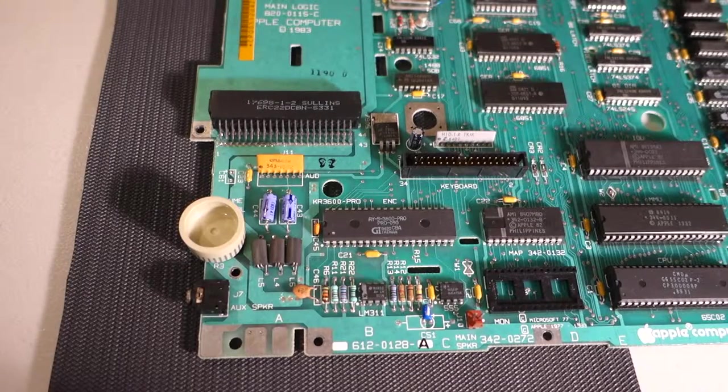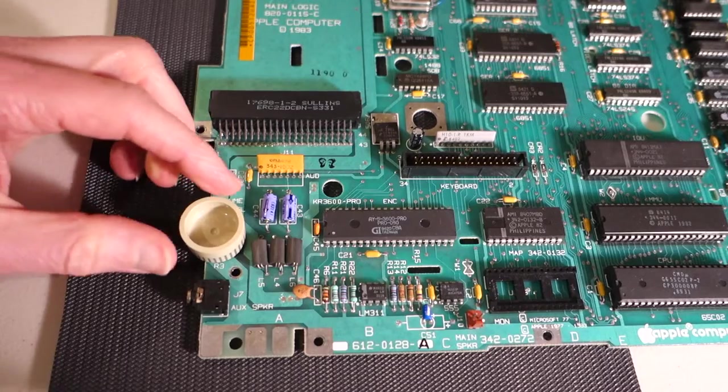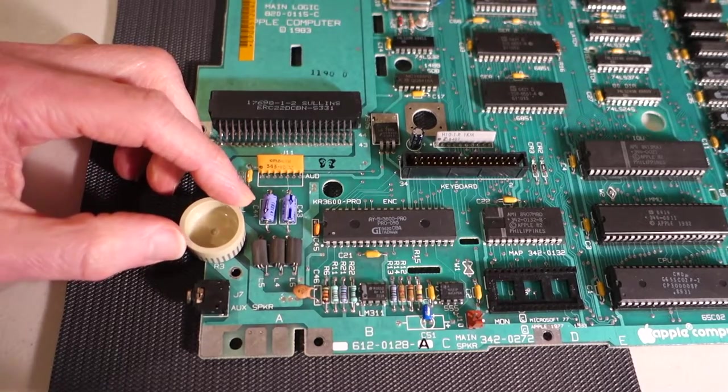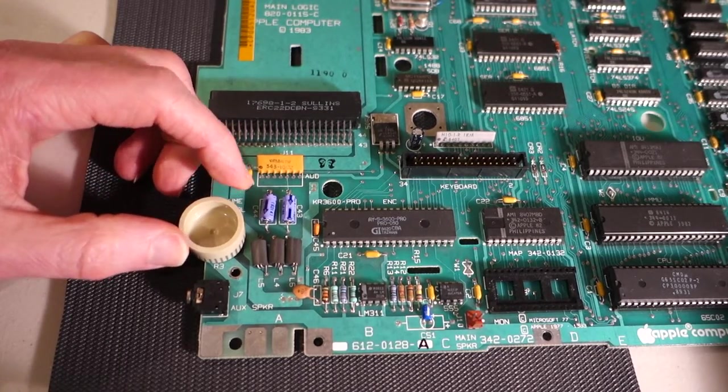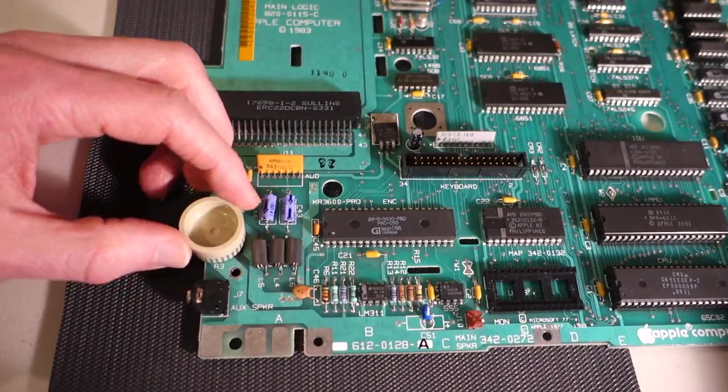Okay, so here's the Apple IIc logic board with the volume control which we're going to try and remove. As you can see on the top of the board there's not much to it. You can't really see how it's attached.